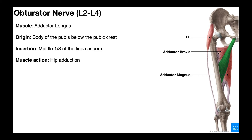Adductor longus is another convergent muscle where the proximal attachment is thinner and it broadens out distally. The origin is on the body of the pubis below the pubic crest. As the adductor longus broadens out distally, it inserts on the middle one-third of the linea aspera. It is primarily a hip adductor — it doesn't really do much of anything else. It's a powerful hip adductor. You can also see that behind adductor longus is adductor magnus, with the brevis sandwiched between them.